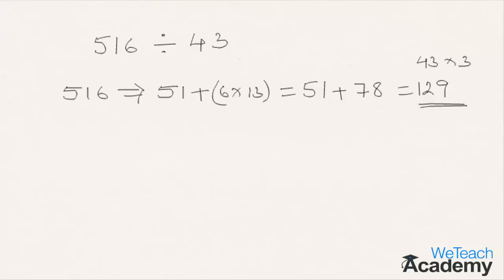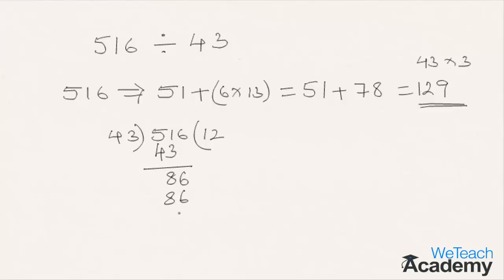Since 129 is divisible by 43 (that is, 43 times 3), let us verify by dividing 516 by 43. 43 once gives 43; 51 minus 43 is 8. Bringing down the next digit 6 gives us 86, and 43 times 2 is 86. We get remainder 0, so the given number is exactly divisible by 43.